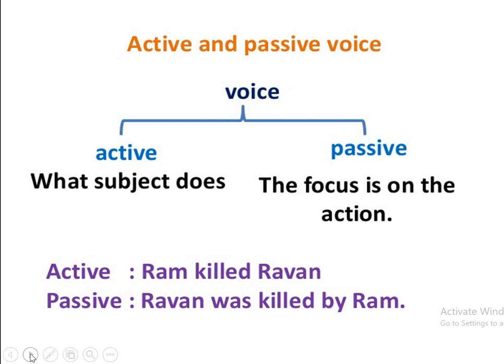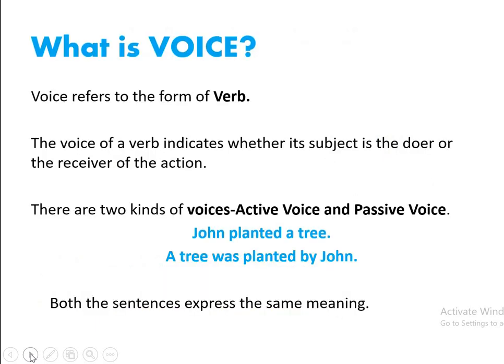To present it with an example, in case of an active sentence we will say 'Ram killed Ravan' — the subject is in focus and the fact of killing Ravan is the second part of the sentence. While in case of a passive, 'Ravan was killed by Ram', where Ravan becomes the focus of action. Voice refers to the form of a verb. The active voice of a verb indicates whether its subject is the doer or the receiver of the action.